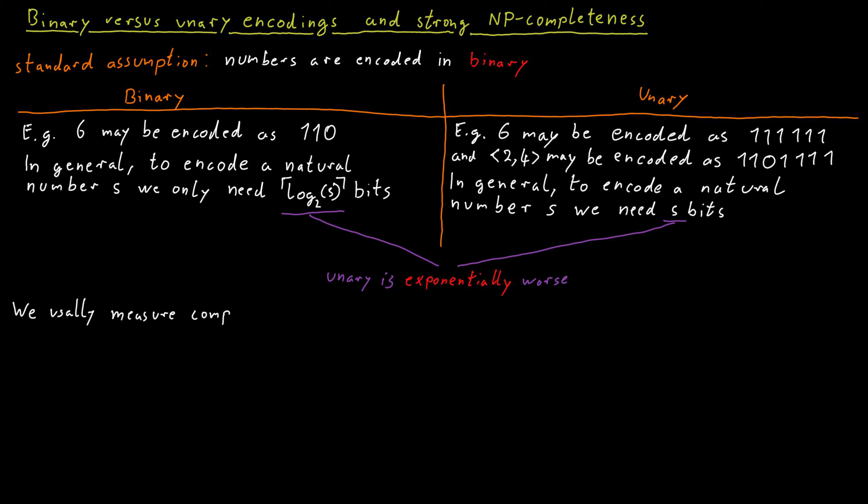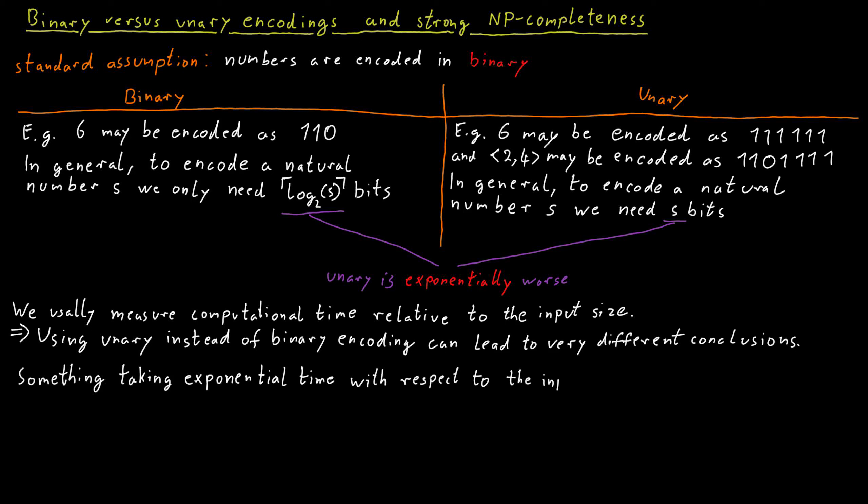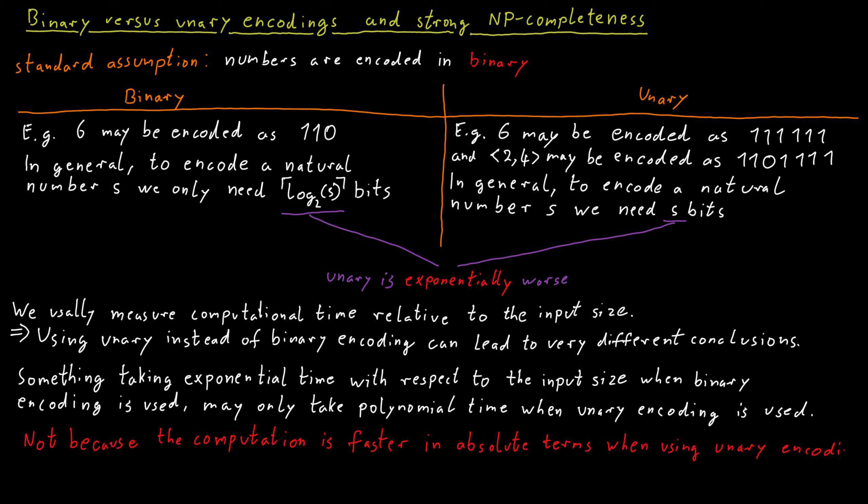We usually measure computational time relative to the input size. And because of this, using unary instead of binary encoding can lead to very different computational conclusions. Something taking exponential time with respect to the input size when binary encoding is used may only take polynomial time when unary encoding is used. Not because the computation is faster in absolute terms when we use unary encoding, but because the input string is longer.